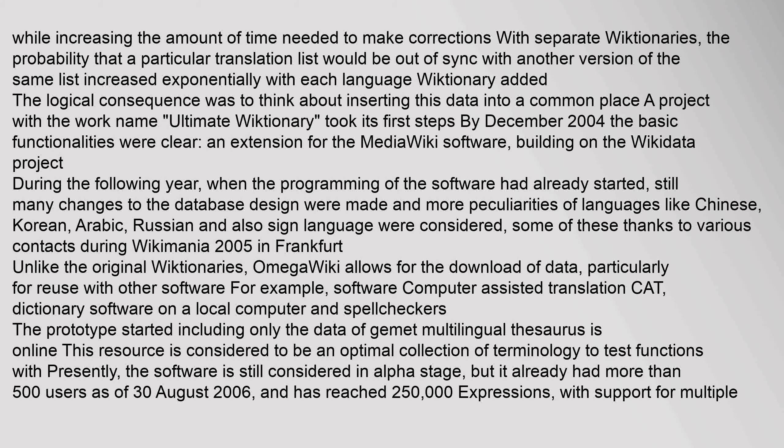Some of these thanks to various contacts during Wikimania 2005 in Frankfurt. Unlike the original Wiktionaries, OmegaWiki allows for the download of data, particularly for reuse with other software, for example Software Computer Assisted Translation (CAT), Dictionary Software on a local computer, and Spellcheckers.